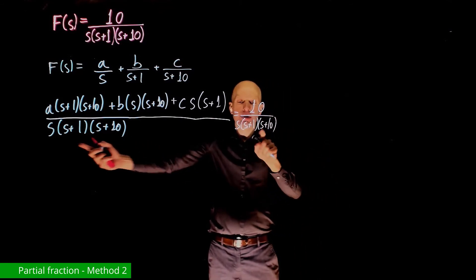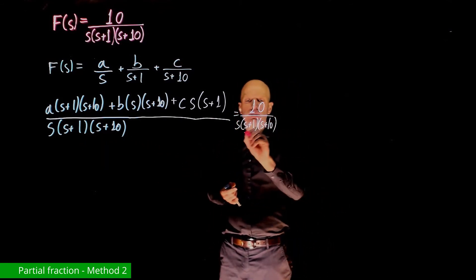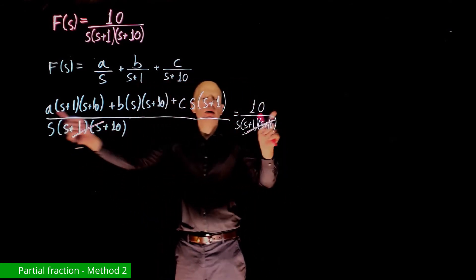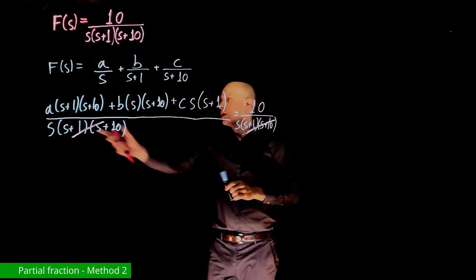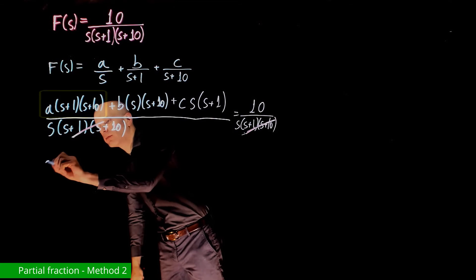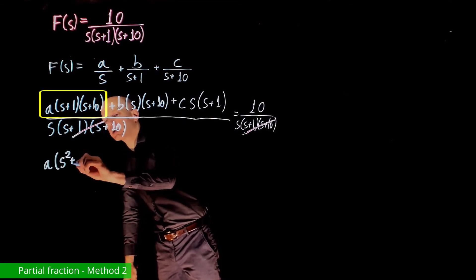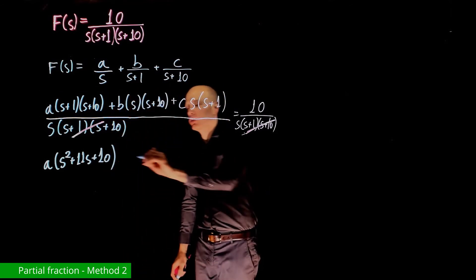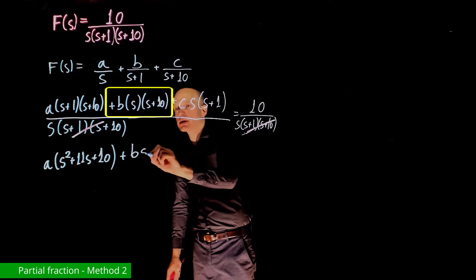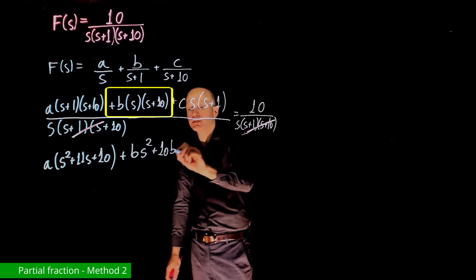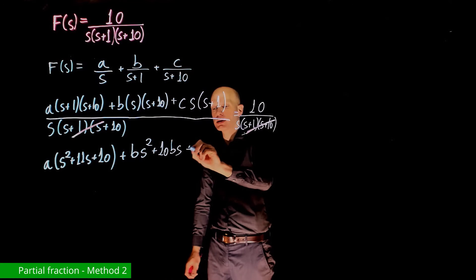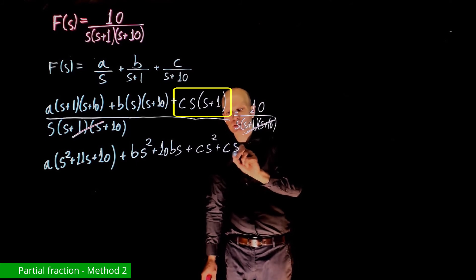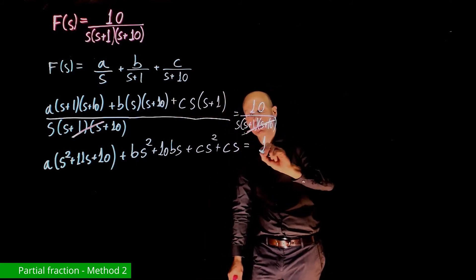The denominators on both sides cancel. Expanding the left side: a(s²+11s+10) + b(s²+10s) + c(s²+s). This equals 10. We now equate coefficients of each power of s on the left side with the corresponding coefficients on the right side.